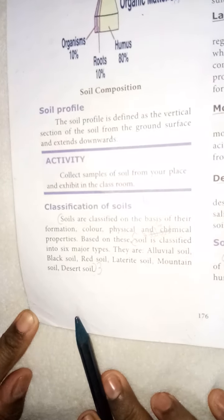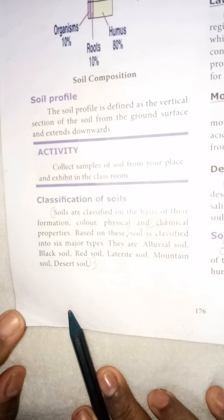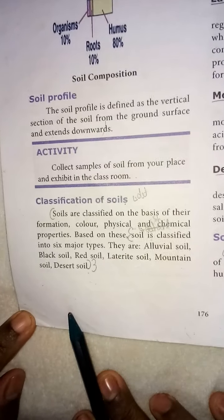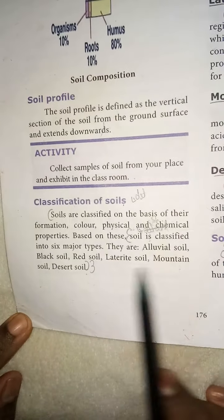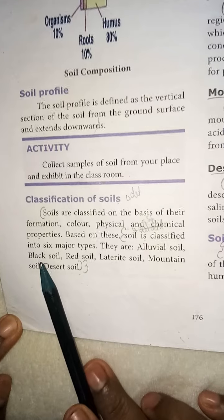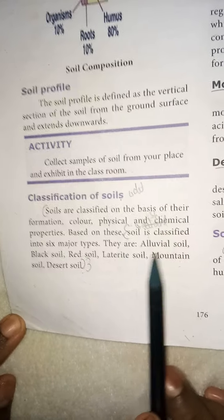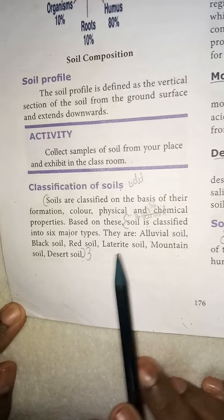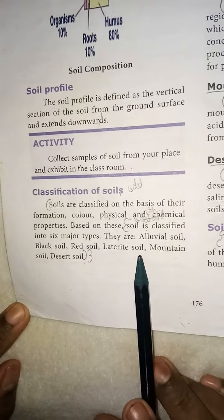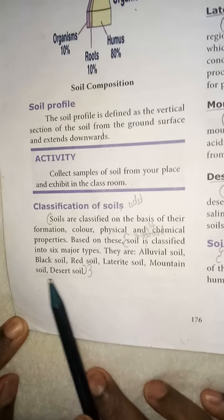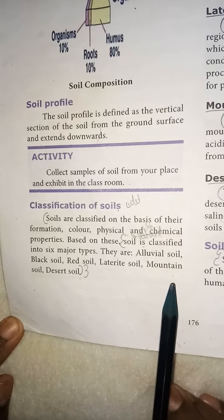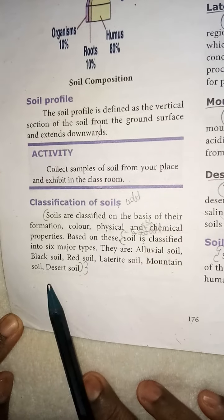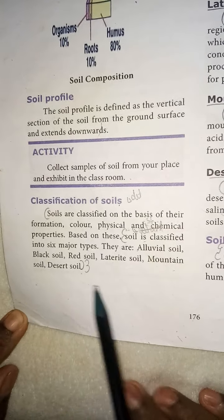Now we will see about the classification of soils. Soils are classified on the basis of formation, color, and physical and chemical properties. Based on these, soil is classified into six major types: alluvial soil, black soil, red soil, laterite soil, mountain soil and desert soil.